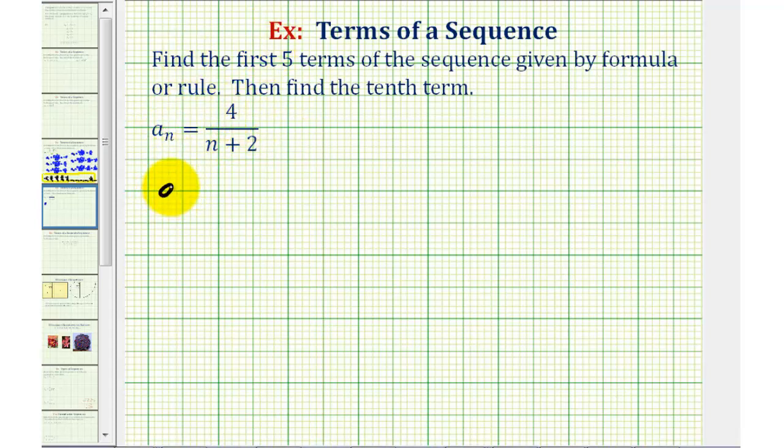we need to remember that a sub one is equal to the first term in the sequence, and therefore n is equal to one. Therefore to find the first five terms of the sequence, we need to find a sub one, a sub two, a sub three, a sub four, and a sub five.